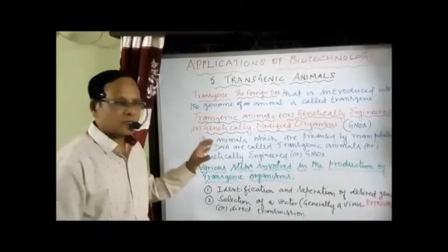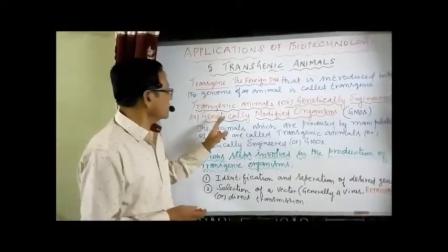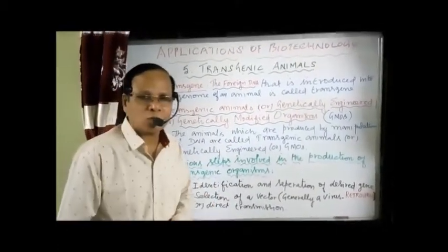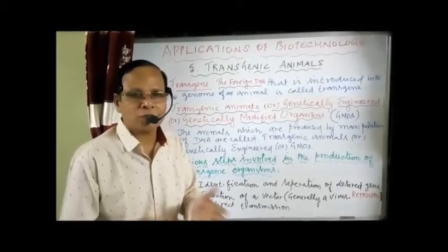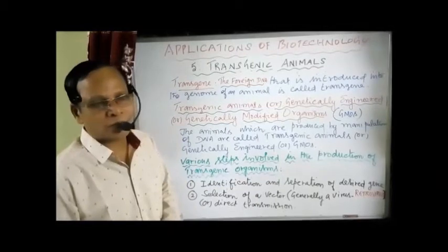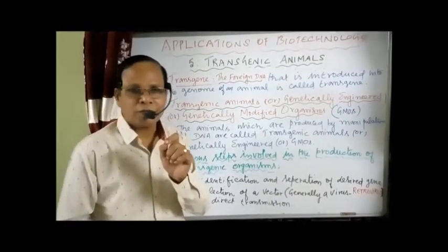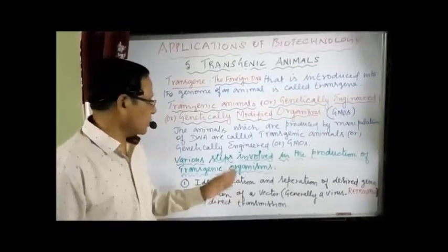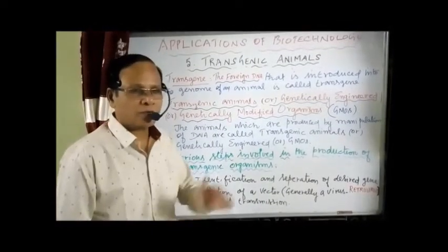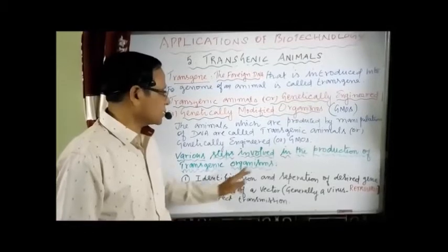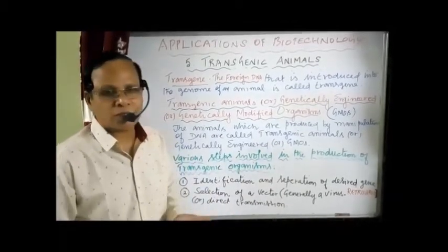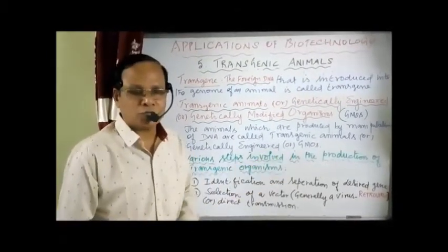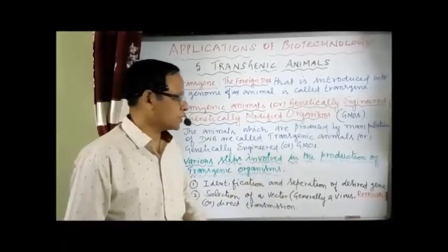What are the various steps involved in the production of genetically modified organisms or transgenic organisms? Step number one: you have to identify the gene of interest, the foreign DNA, the required DNA, and then separate the DNA from that cell. Number one: identification and separation of the desired gene — for example, human insulin gene or human alpha-lactalbumin gene.